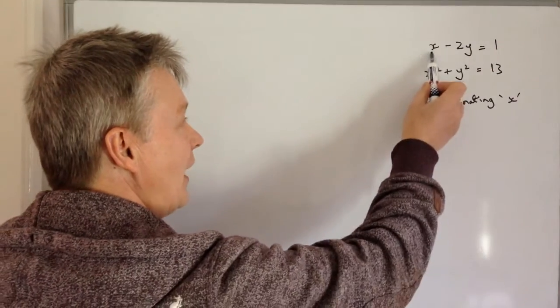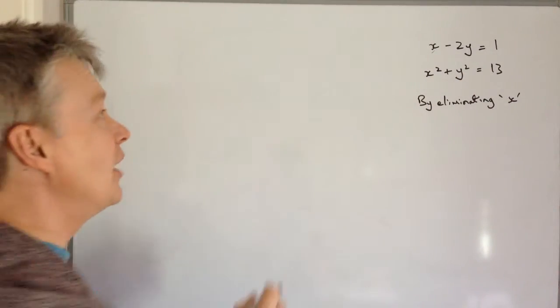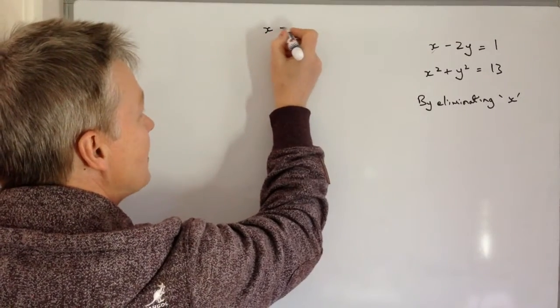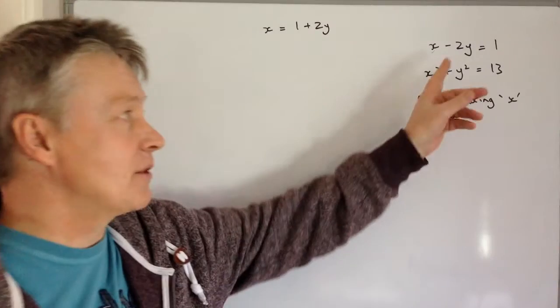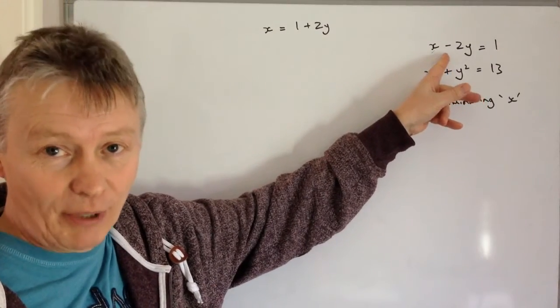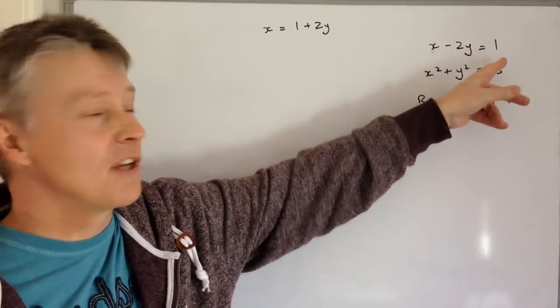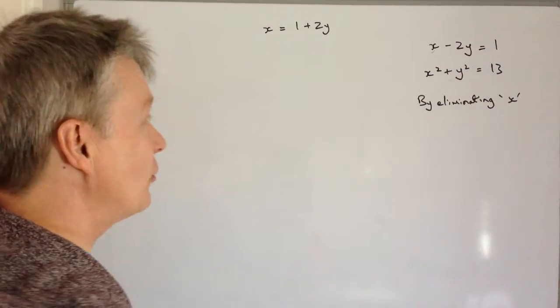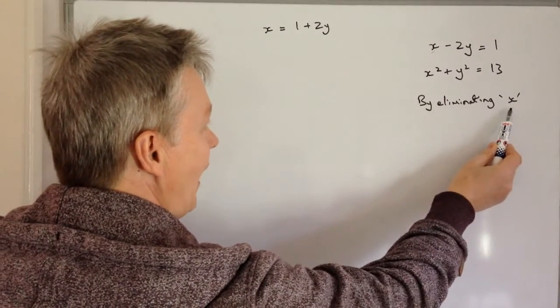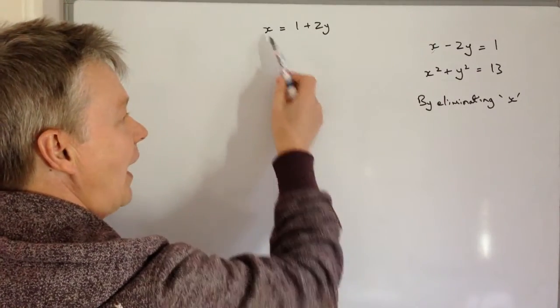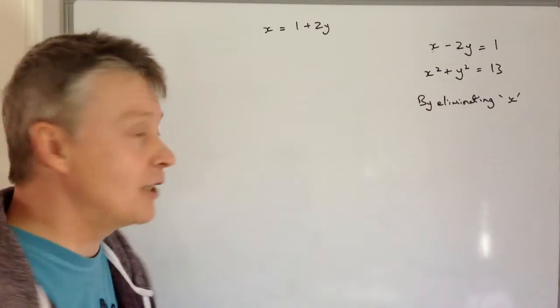The first thing is we've got X minus 2Y equals 1, so I can rewrite that to X equals 1 plus 2Y, because all I'm doing is adding 2Y to both sides. If I do that, that becomes 0 and this becomes 1 plus 2Y. I'm going to take that value of X, and they've asked us to eliminate X, and I'm going to put it into this part of the second equation.